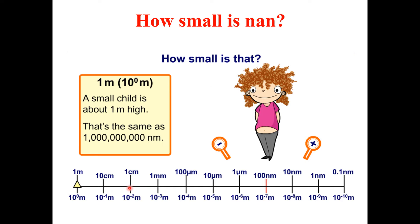Proceeding toward the smallest: one millimeter is 10 raised to the power of minus three meters. Then you have 100 micrometers, equal to 10 raised to the power of minus four meters. Then 10 micrometers, equal to 10 raised to the power of minus five meters. Then one micrometer, equal to 10 raised to the power of minus six meters.